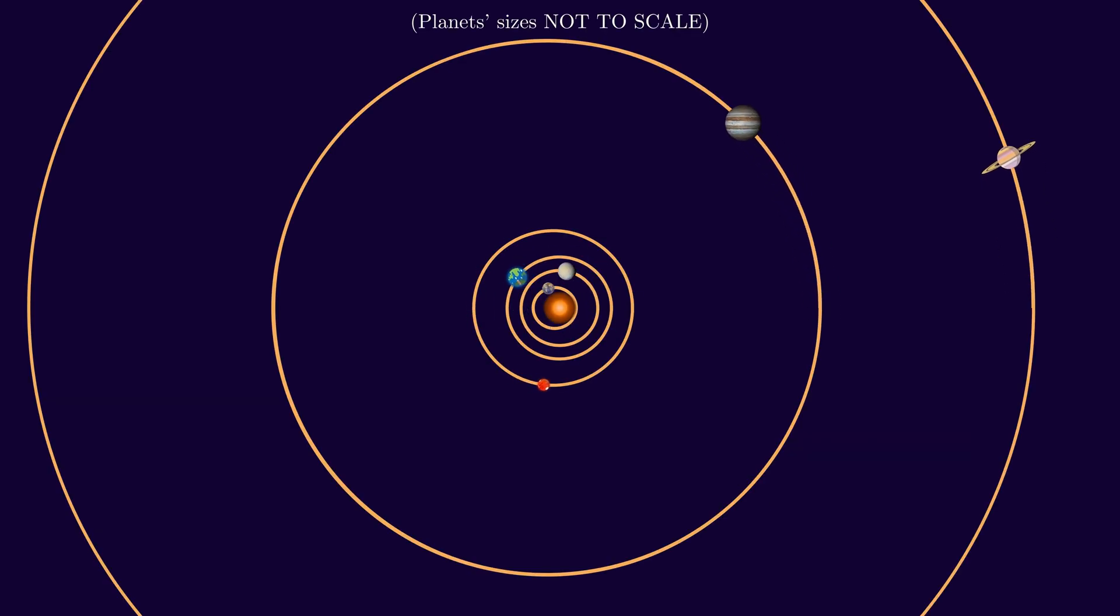For instance, according to Newtonian mechanics, if the Sun were to disappear suddenly, its gravitational influence would cease immediately across the entire universe and all the planets, irrespective of their distance from the Sun, will fly away from orbit at this same instant.